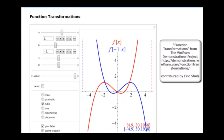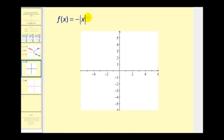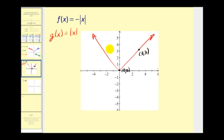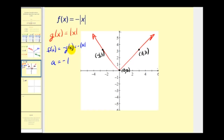Let's go ahead and take a look at some of our own examples now. The first thing we want to recognize is that our parent function would be g of x equals the absolute value of x, which is just a V that opens upward. Some key points on this graph would be (0, 0), (3, 3), and (-3, 3). So f of x is really just the opposite of g of x, which is equal to negative absolute value of x. Here we should recognize that a is equal to negative 1, or that we're changing the sign of the y-coordinates — therefore it's a reflection across the x-axis.